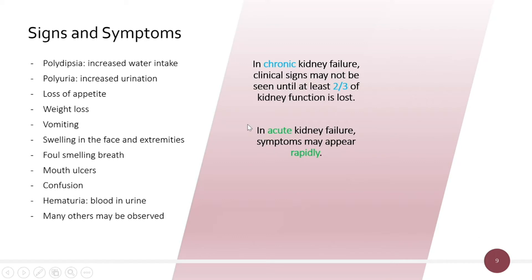Signs and symptoms associated with renal failure include polydipsia, or increased water intake, and polyuria, which is increased urination — these two commonly happen together. You can also see loss of appetite, weight loss, vomiting, swelling in the face and paws, more foul-smelling breath than usual, mouth ulcers, confused or abnormal behavior, and hematuria, or blood in the urine. These are just a few of the many symptoms that could be observed.